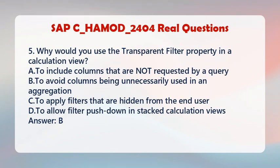Question 5: Why would you use the transparent filter property in a calculation view? A. To include columns that are not requested by a query. B. To avoid columns being unnecessarily used in an aggregation. C. To apply filters that are hidden from the end user. D. To allow filter pushdown in stacked calculation views. Answer: B.